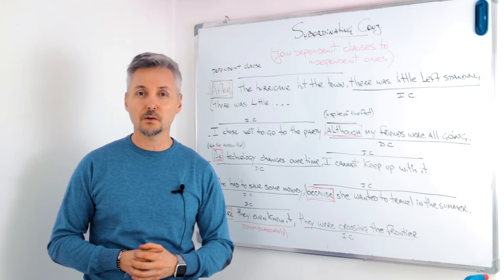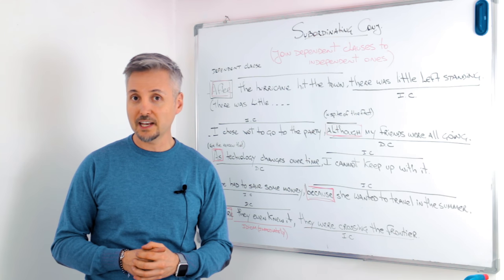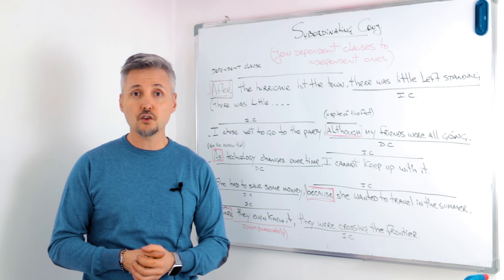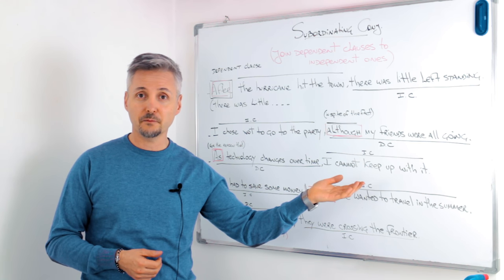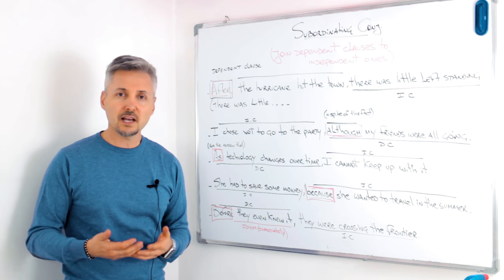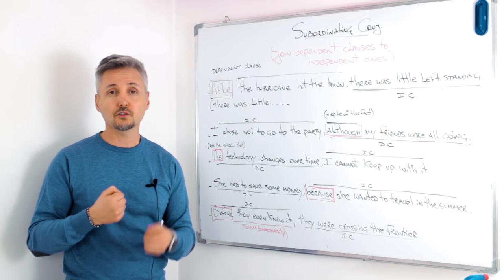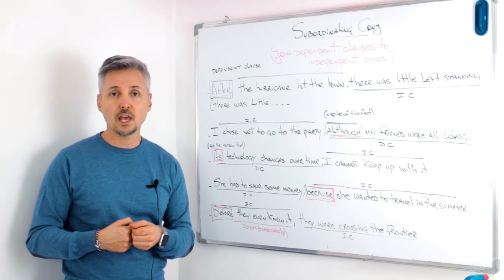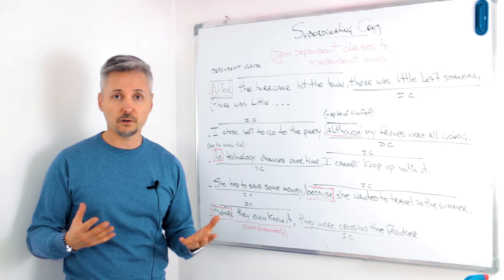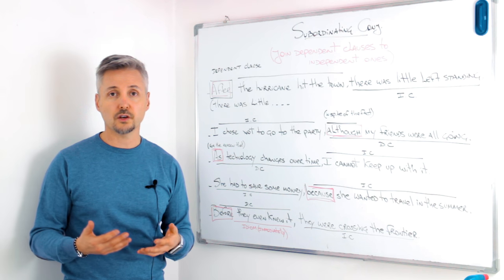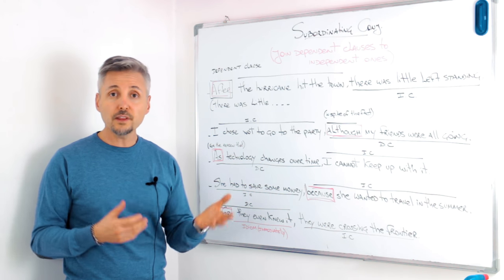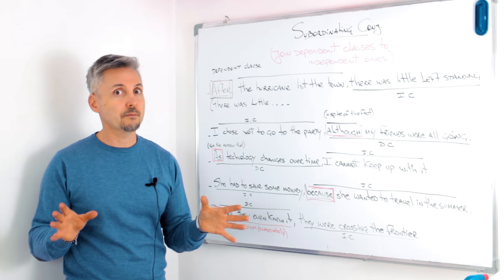I have already talked about subordinating conjunctions. If you want to review that lesson, you may do so by clicking here. Why, then, have I decided to review subordinating conjunctions? Conjunctions, in general, are very important when you write a composition or when you write a letter. Subordinating conjunctions are very important.